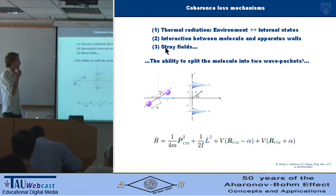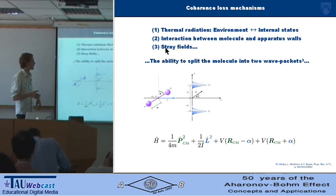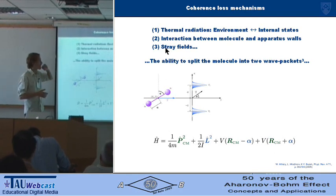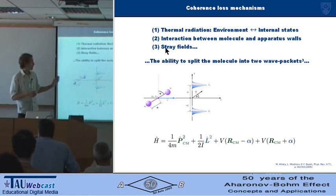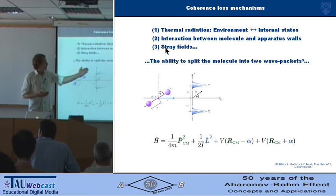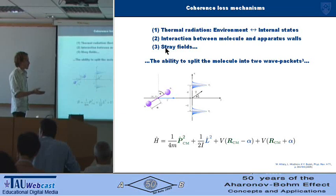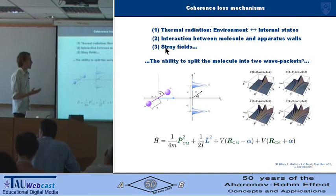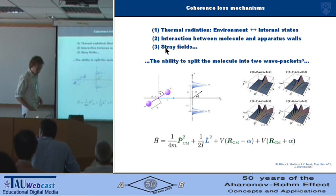So a group in Bratislava studied this a few years ago. And they considered quite a simple model to find out what the loss of coherence was due to the splitting of the wave packet. Their simple model was basically just two atoms rigidly coupled with a single internal degree of freedom, which is just an angular one, and a centre-of-mass motion scattering off two slits, represented by just two Gaussian potentials. And then they worked out, using the usual Born scattering, what the resulting interference intensity was.